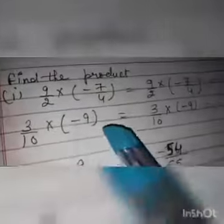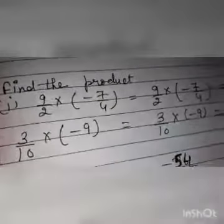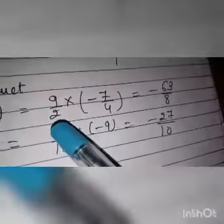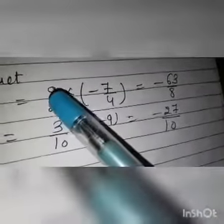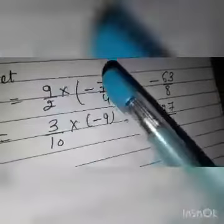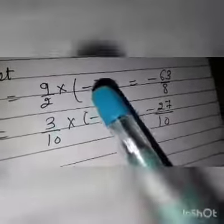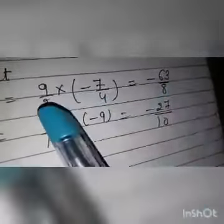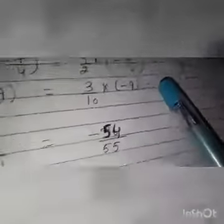Third question: find the product — we will multiply here. First part is 9 by 2 multiplied by minus 7 by 4. We multiply numerator by numerator and denominator by denominator. If something can be cancelled, we cancel first; if not, we multiply directly. 9 times 7 is 63, and 2 times 4 is 8. There is a negative sign, so the answer is minus 63 by 8.